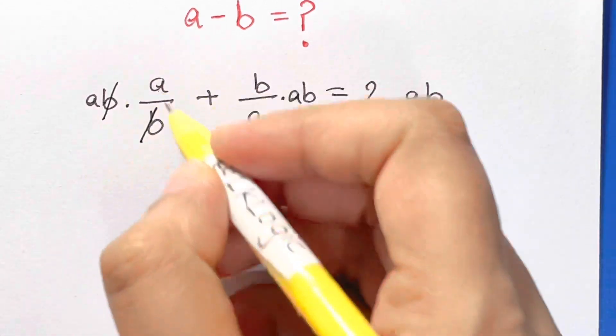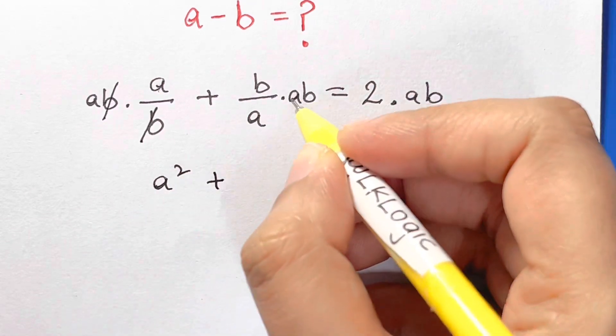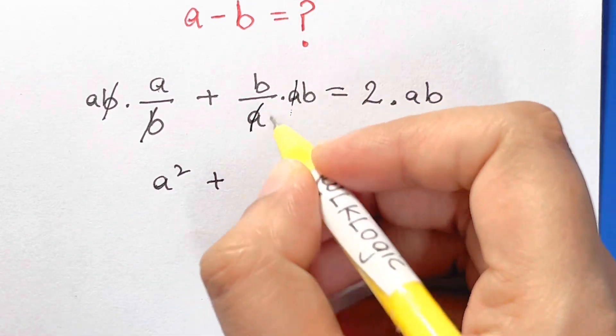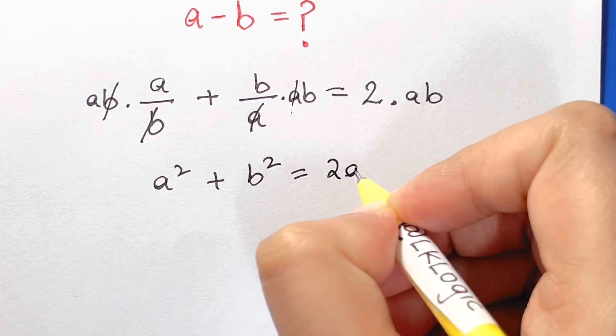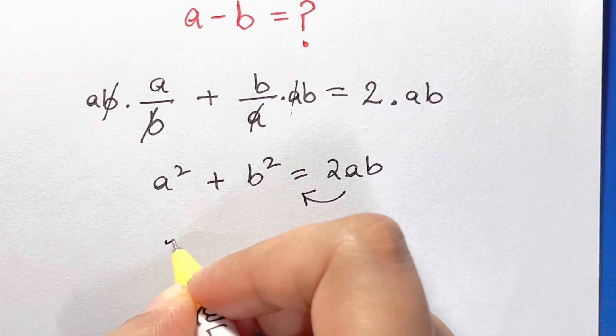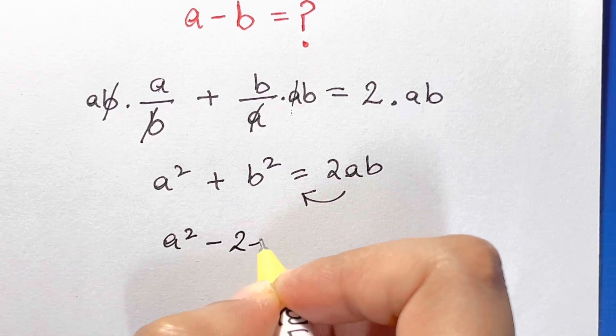Here I have b and b which cancels out, so I have a square plus here I have a and a cancelled, b square is equal to 2ab. Let me bring it to this side, so what do I have now? a square minus 2ab plus b square is equal to 0.